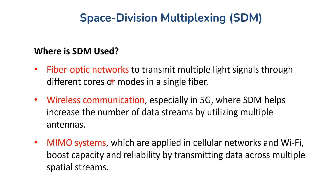In fiber-optic networks, SDM is used to transmit multiple light signals through different cores or modes within a single pipe, enabling much higher data capacity without needing more physical cables. In wireless communication, especially in 5G, SDM plays a crucial role in allowing more data streams to be transmitted using multiple antennas, helping to increase both data throughput and network efficiency. In MIMO systems, commonly used in cellular networks and Wi-Fi, SDM increases the overall capacity and reliability of data transmission by sending data across multiple spatial streams, improving performance in high-demand environments.